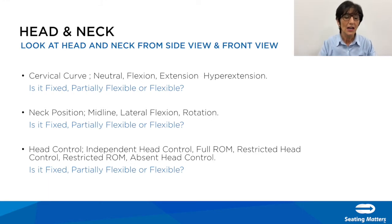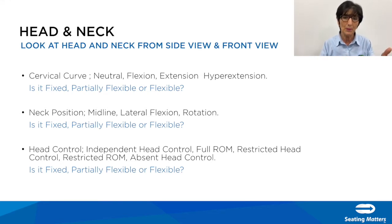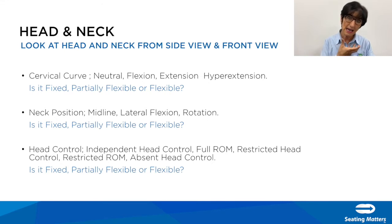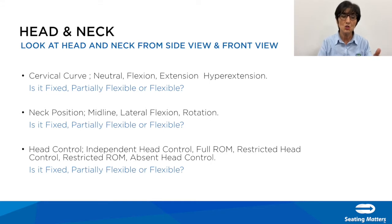Then go to the head and neck, looking from the side and from the front. Look at the cervical curve — is it neutral, in flexion, in extension, or hyperextension? Is it fixed or correctable? Look at the neck position — is it midline, in lateral flexion, or is there rotation of the head? Is it fixed or correctable? Then assess head control — is it independent with full range of movement, restricted, or absent? Is it fixed or flexible? That completes the supine evaluation.